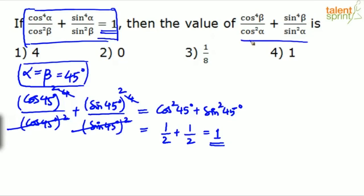Since α = β = 45° satisfies the given equation, we can substitute those values into the required expression as well. Now, is it valid to take α = β? It is not mentioned anywhere that α cannot equal β, so we are free to do so. The required expression with α = β = 45° has the same form and gives the same result: 1. So the final answer is option 1.